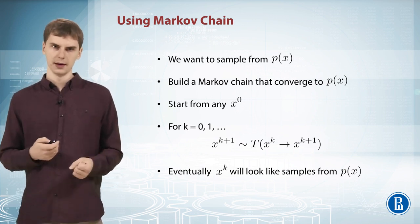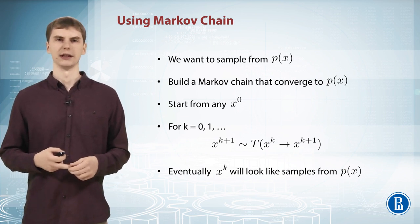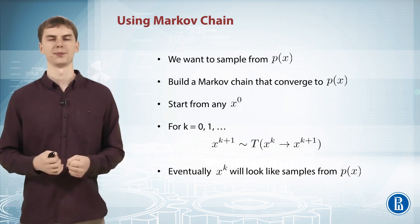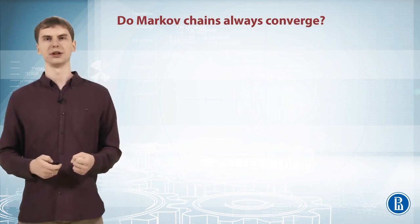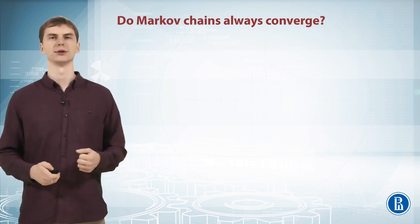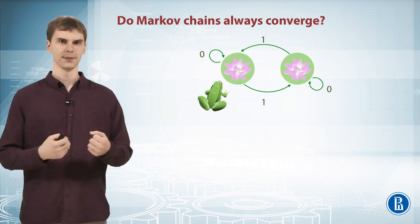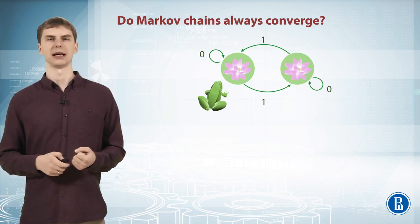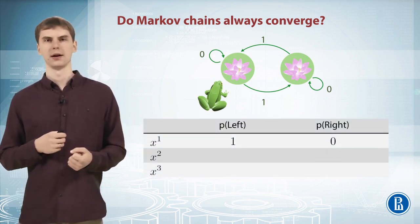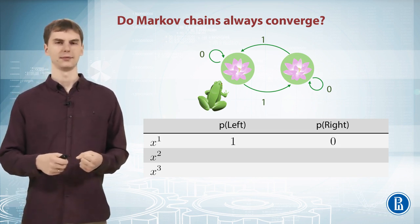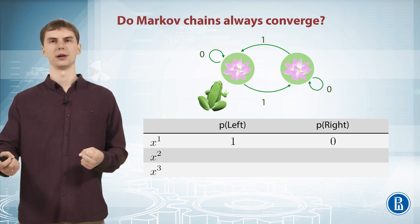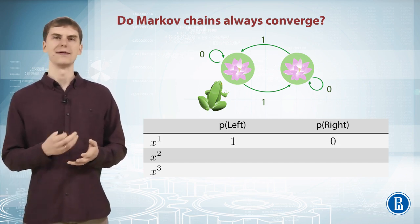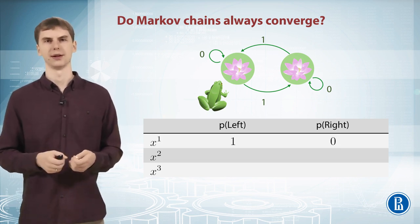This is the general idea. But let's first discuss whether a Markov chain converges at all — in which cases it does and which it doesn't. The first observation is that a Markov chain doesn't have to converge anywhere. For example, consider a dynamic system where the frog always swaps the lily at each time step. Looking at the table: probability of being on the left at step 1 is 1, on the right is 0. Then you swap — certainly on the right next step, then certainly on the left, and so on. This will never converge to anything stable; it always swaps place.